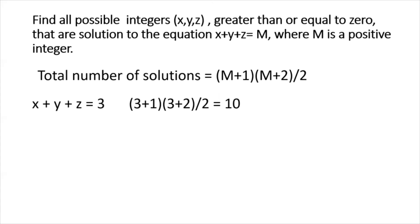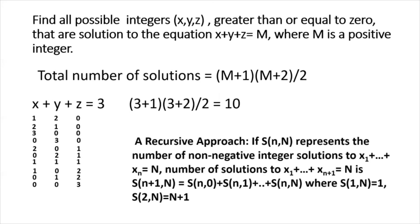So, if x plus y plus z equal to 3, what are the different non-negative integer values that x and y and z can take? So, this is that list over here. And if I count, it comes to 10.